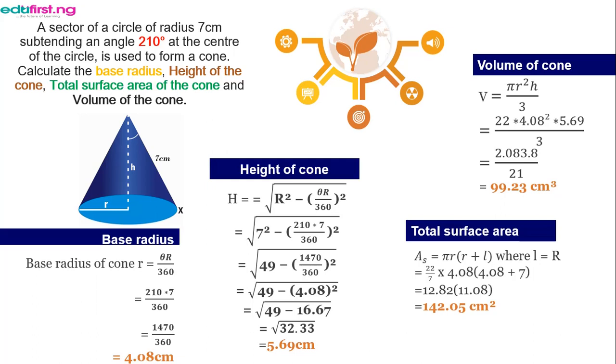And lastly, total surface area. The total surface area is given as A subscript s to be equal to πr open bracket r plus L close bracket where L equals capital letter R. So, same as usual, we substitute the values for π, r and L. Going through that carefully, we would get total surface area of the cone as 142.05 cm².